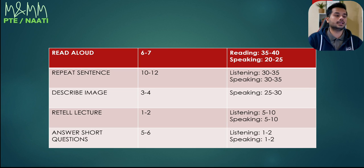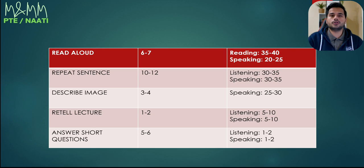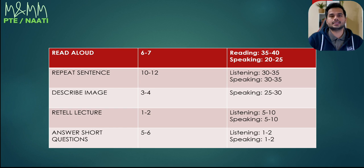Followed by retell lecture. They have reduced the number of questions for this topic — now you only get one to two questions. So the marking is also reduced slightly. In listening and speaking, it gives you about 5 to 10 marks out of 90 depending on how many questions you get. If you're aiming for 65 or 79, this is one topic you cannot take for granted. It's only 5 to 10 marks, but especially for 79, it's a game changer. And for 65, you cannot afford to ignore those marks.